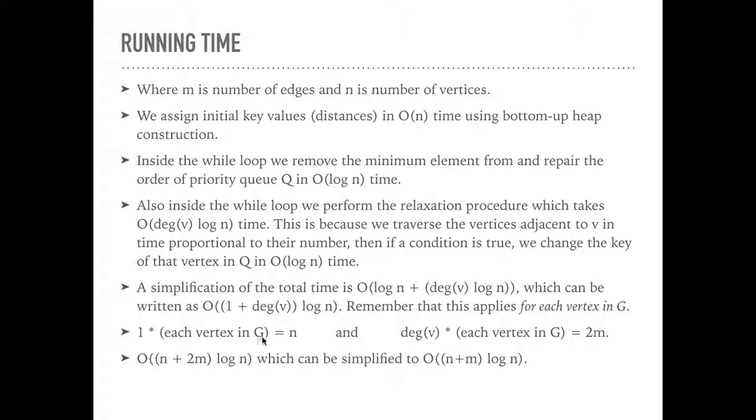So 1 times each vertex in G is n. Number of vertices is going to be n. And the degree v times each vertex equals 2m. That's 2 times the number of edges. So the degree v, the degree of the vertex across every vertex in the graph is going to be twice the number of edges, because each edge is connected to two vertices.